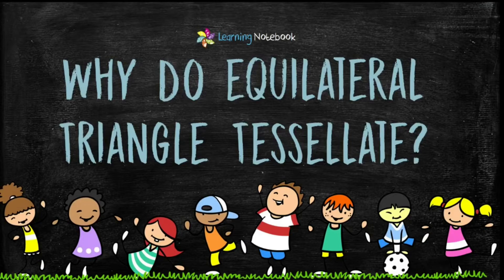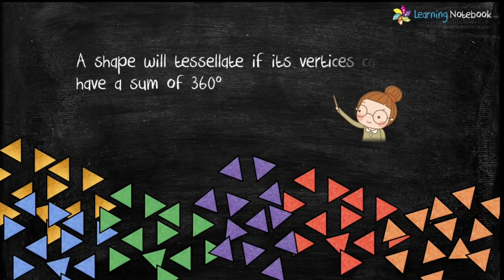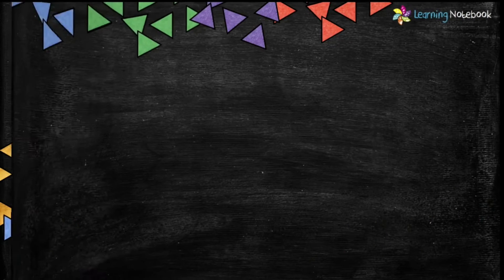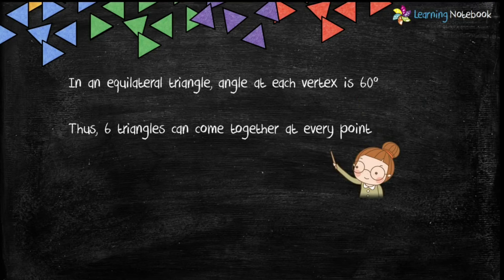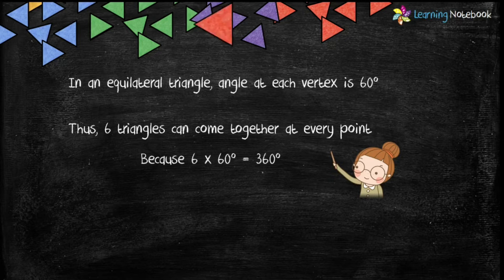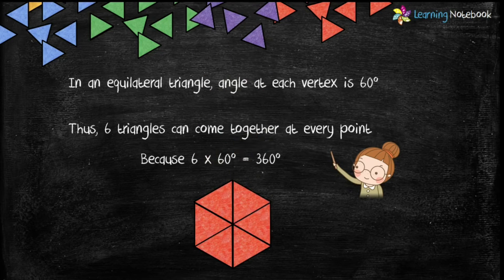Students, a shape will tessellate if its vertices can have a sum of 360 degrees. In an equilateral triangle, angle at each vertex is 60 degrees. Therefore, six triangles can come together at every point because 6 into 60 degrees equals to 360 degrees.